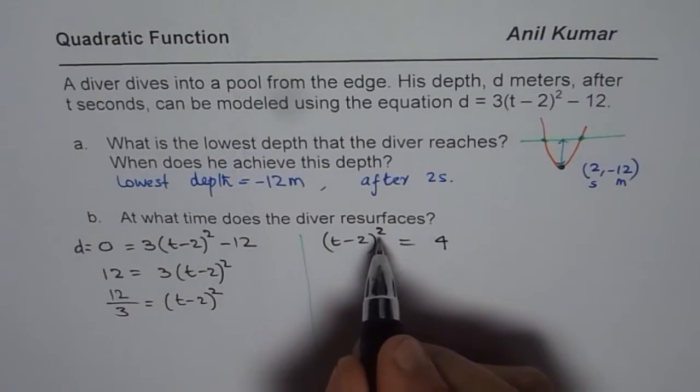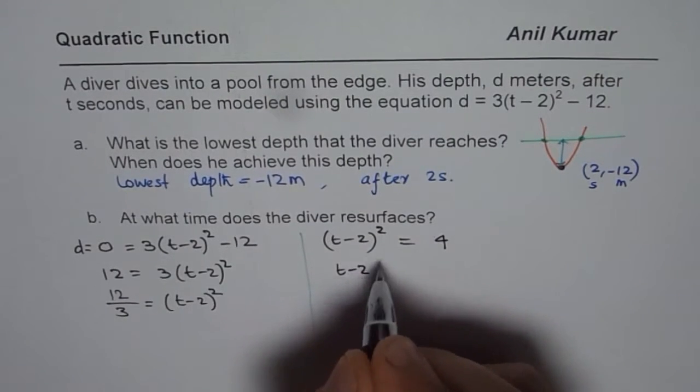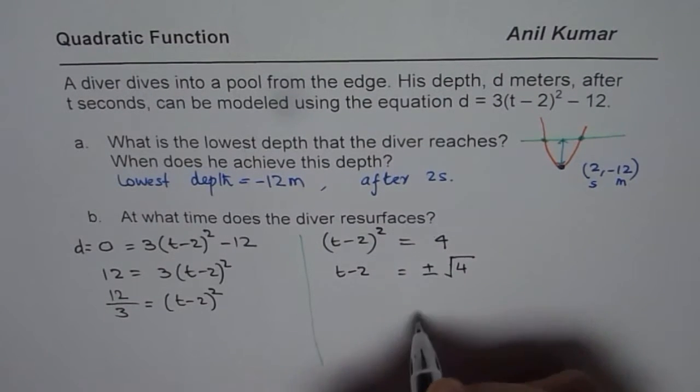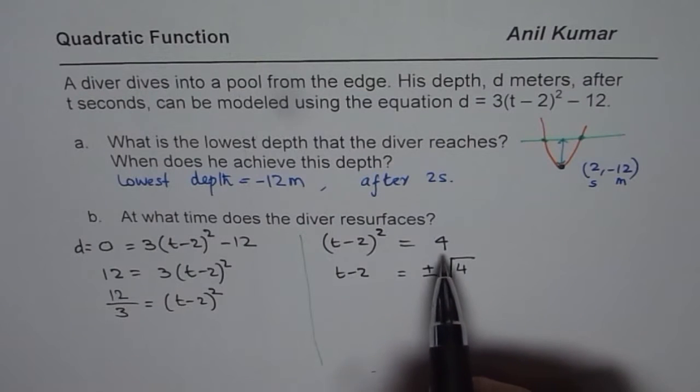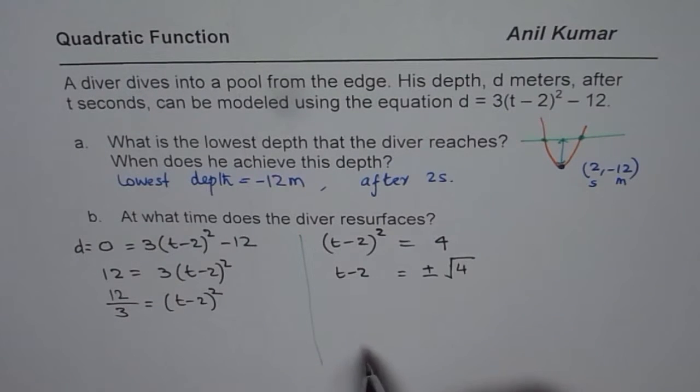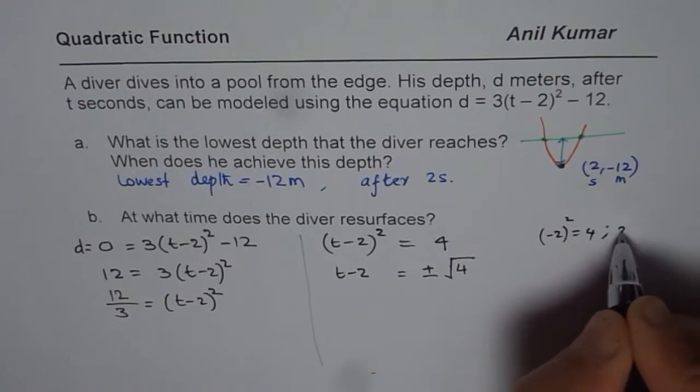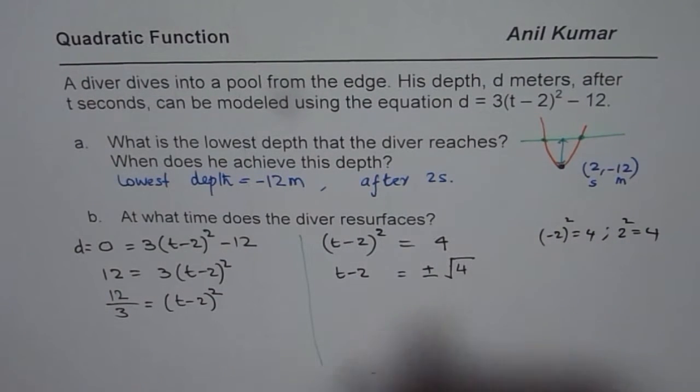Now we should square root it. Once you square root a square, you get t - 2. On the right side, when you square root 4, you have to write plus and minus. Since (-2)² is also equal to 4, and 2² is also 4, that is why we need both.